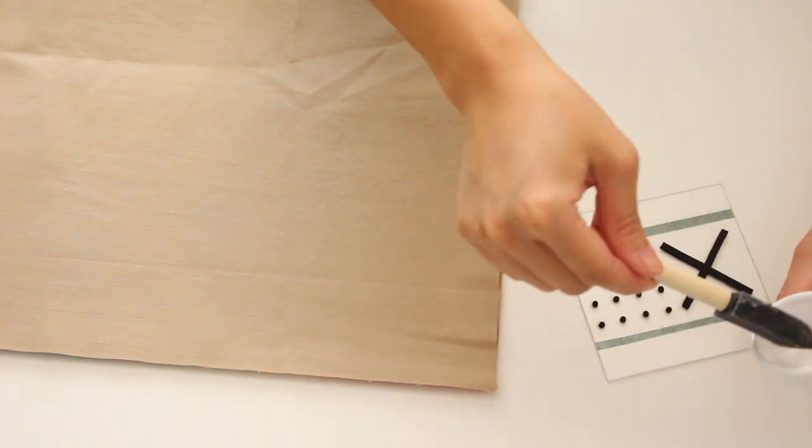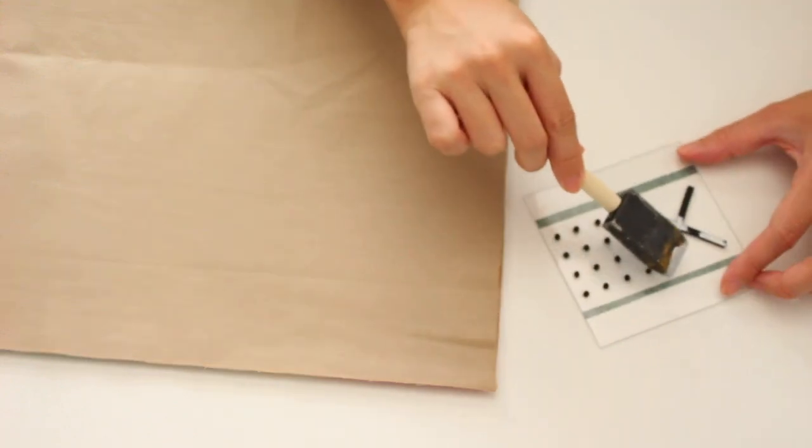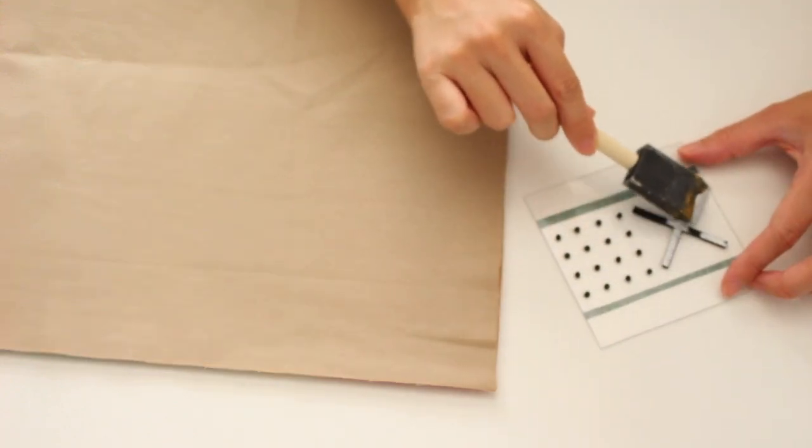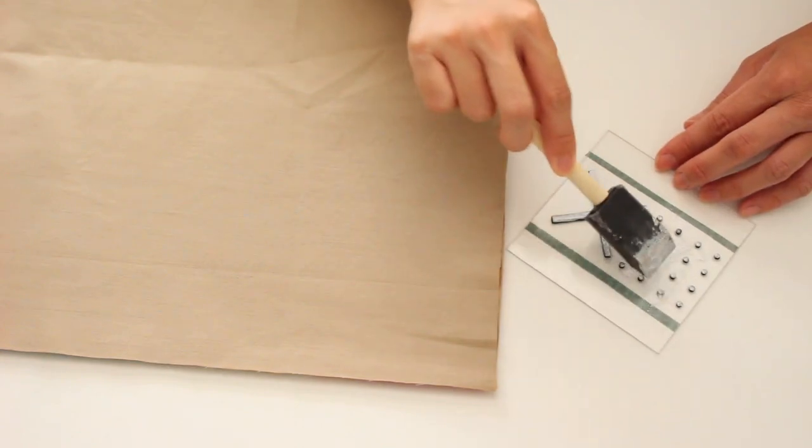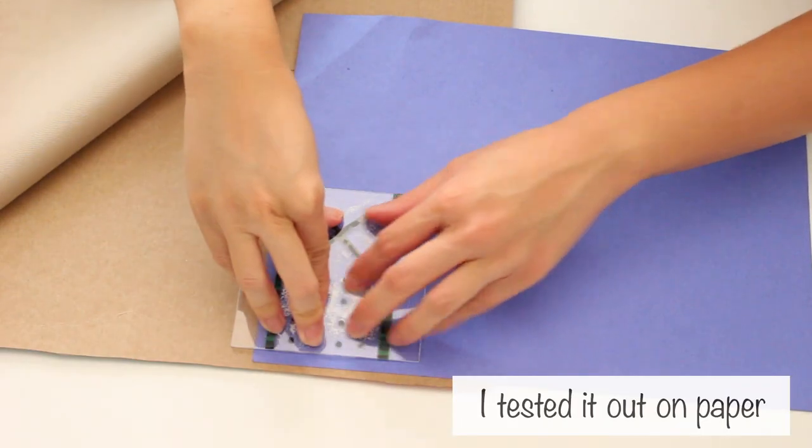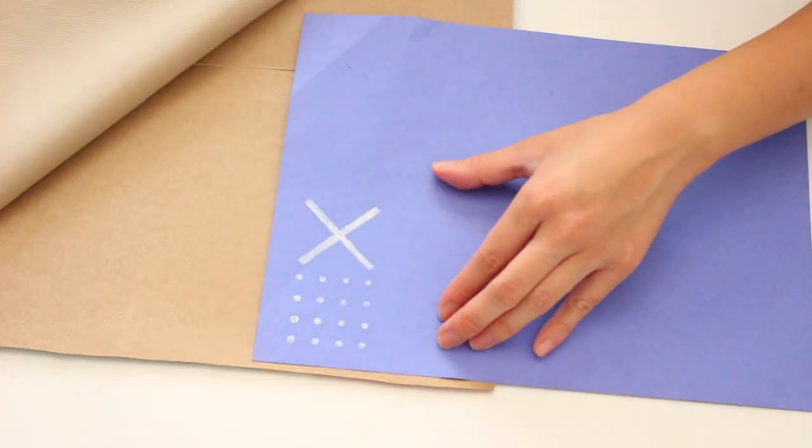I added washi tape to help me align my pattern. I didn't have a foam paint roller, so I used a foam brush to apply a thin, even layer of fabric paint.